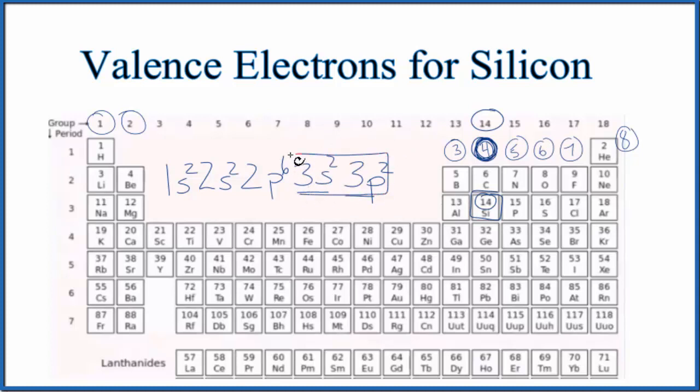So in the highest energy level here, we have a total of 2 plus 2, 4 valence electrons, which is what we found when we looked at the periodic table, group 14 or 4A.